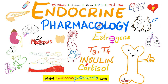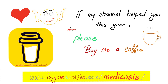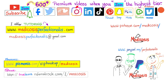Do you want to learn more about insulin, the types of insulin, how to calculate the dose of insulin, the different glucose-lowering agents, cortisol, thyroid hormone, estrogen, progesterone, and androgens? Download my endocrine pharmacology course at medicosisperfectionalis.com — it comes with videos, notes, and cases. There are more than 600 premium videos available on my channel when you click the join button and choose the highest tier.